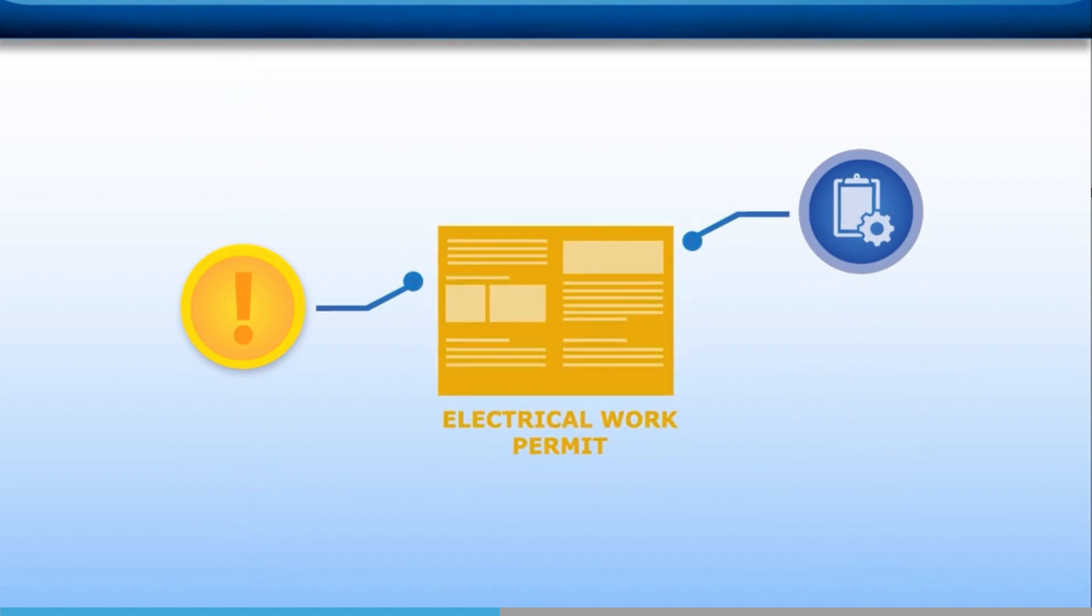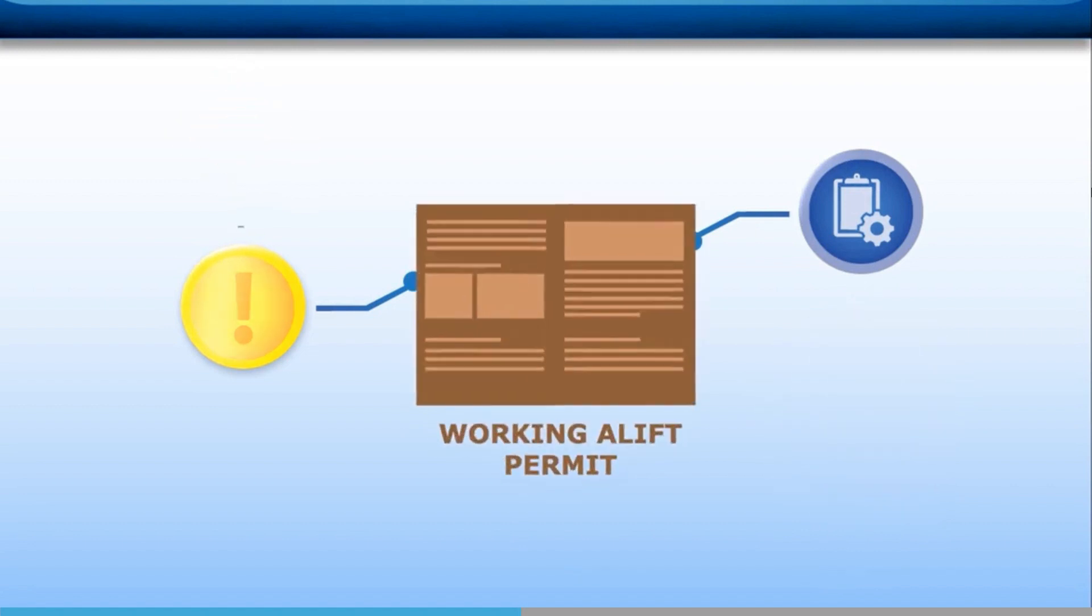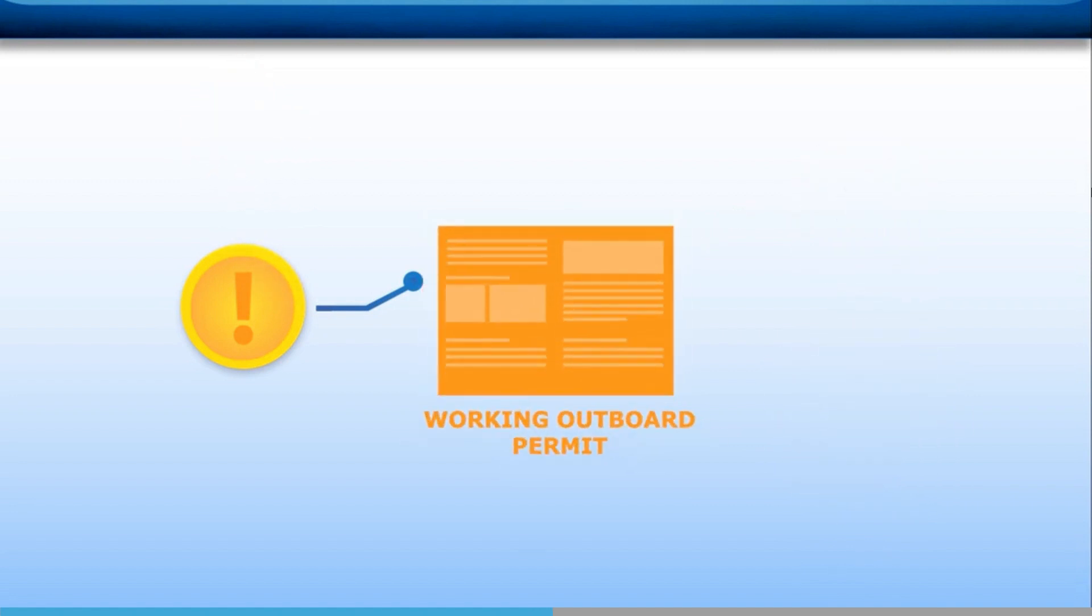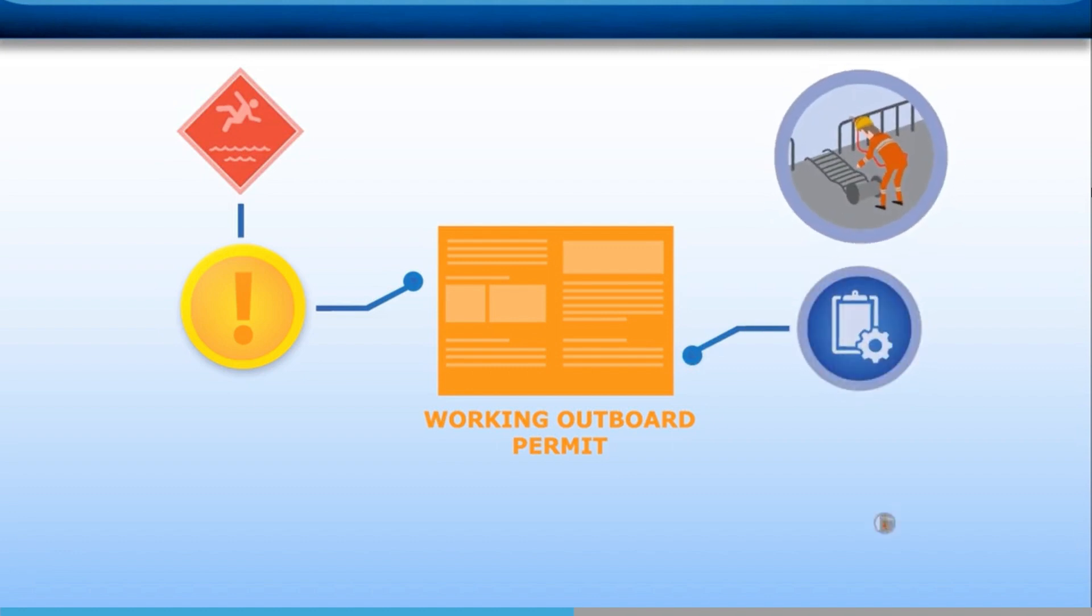An electrical work permit should be issued for any job where there is a risk of electrical shock, such as replacing electrical fittings. Working aloft permits should be issued when someone can fall from height. This could happen when replacing navigation lights or any other work so high up that you risk injury by falling. Working outboard permits should be issued when there are risks such as falling into the sea. This could happen when rigging a pilot ladder or when work is being done outside the ship's hull.